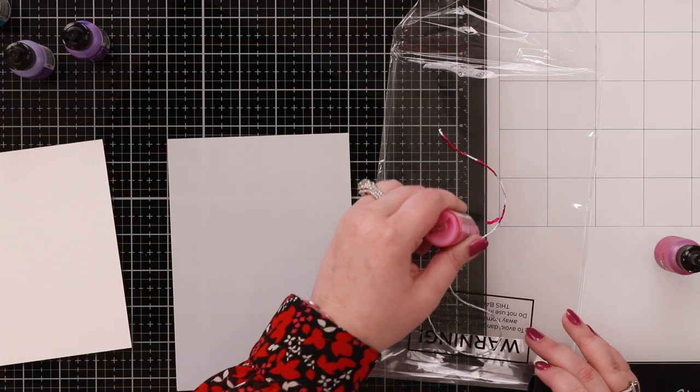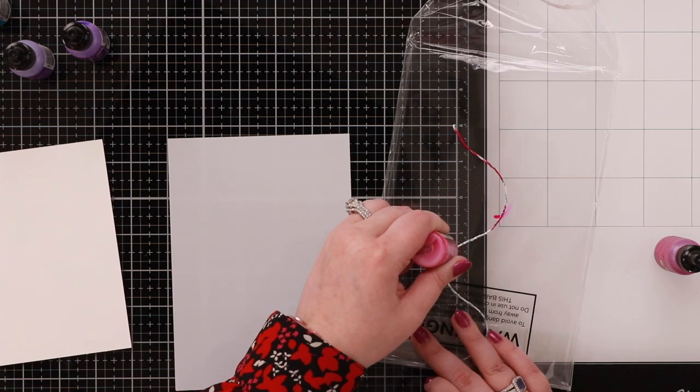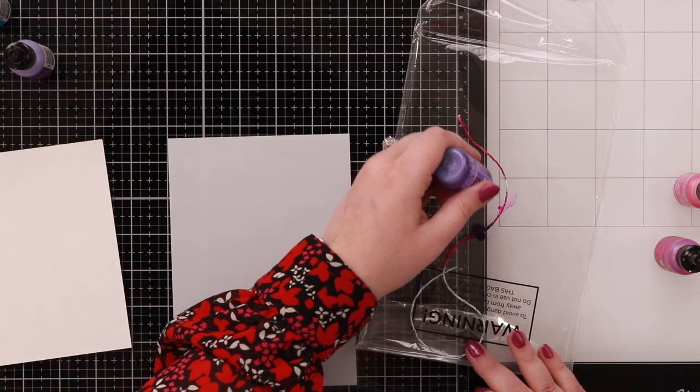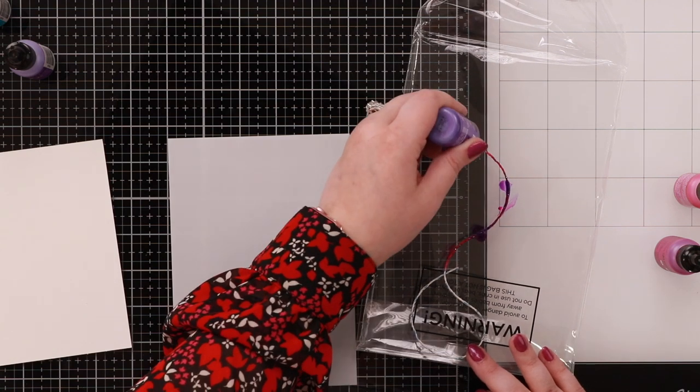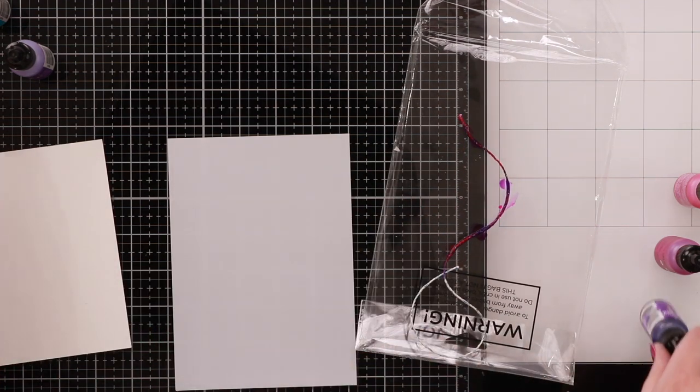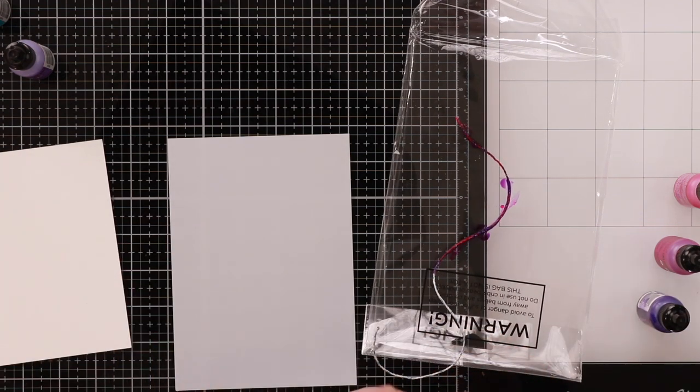You can see how easy this bit is. I'm just adding some alcohol ink to my twine. This is just regular Baker's twine we would use in our card making, and I'm adding different patches in different places so that we get some nice variation.